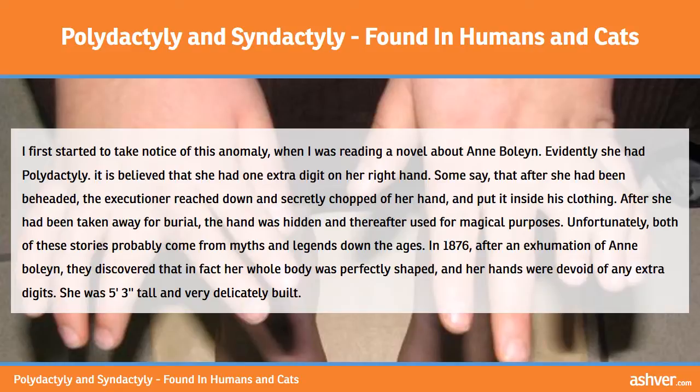In 1876, after an exhumation of Anne Boleyn, they discovered that in fact her whole body was perfectly shaped, and her hands were devoid of any extra digits.